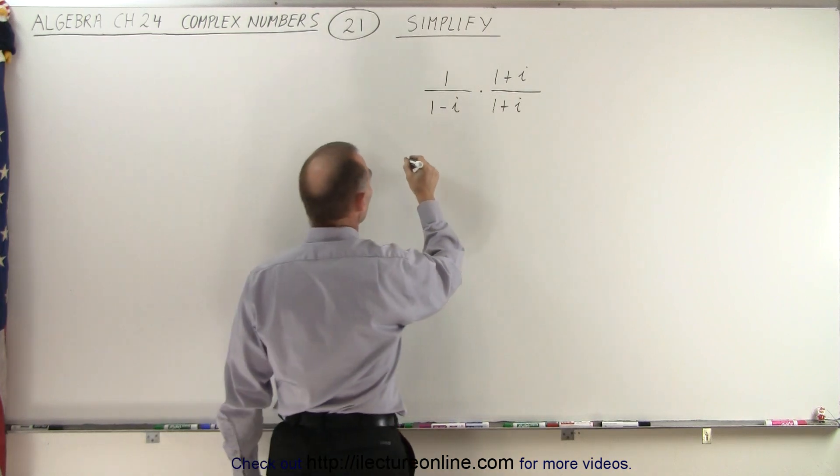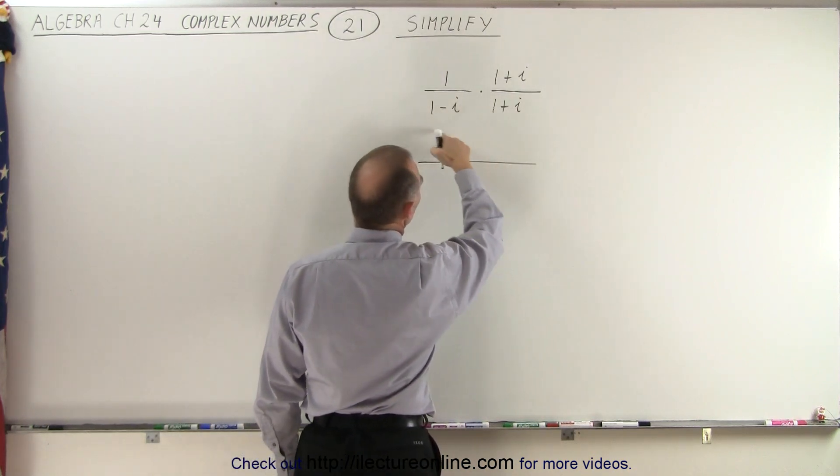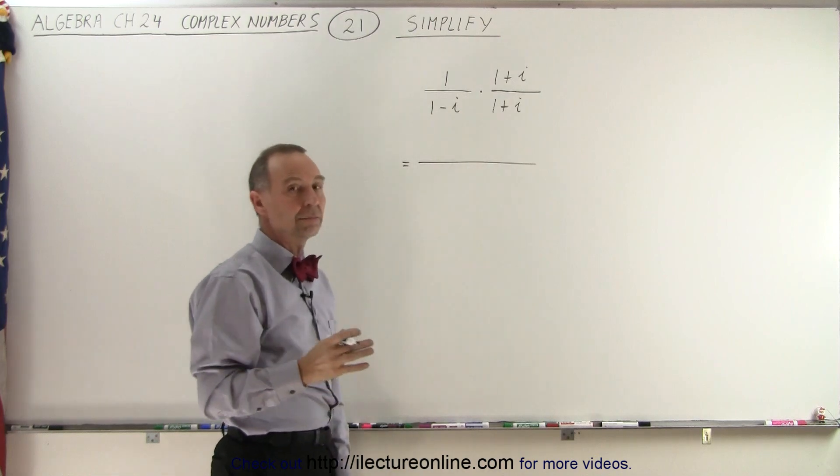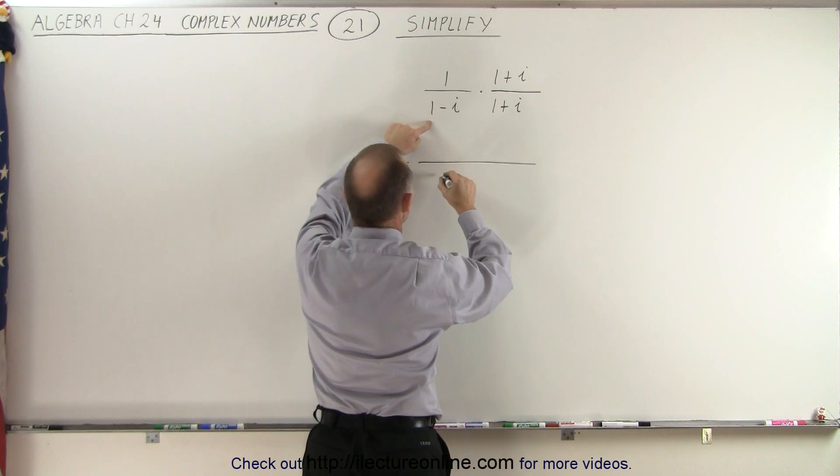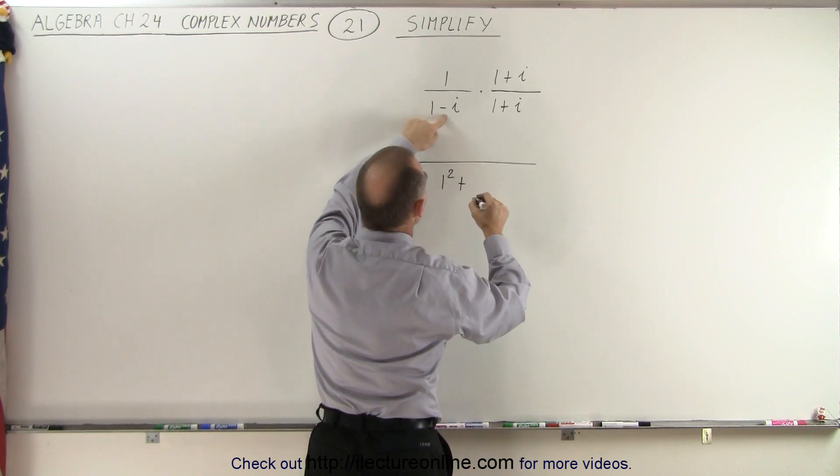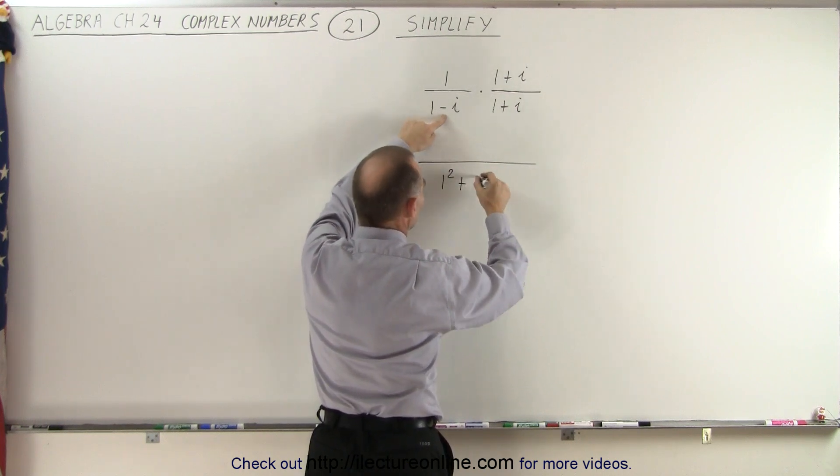Once we've done that, we realize that in the denominator we will end up with a real number, not a complex number. And that real number will be the first term squared, plus the positive of the coefficient of the second term squared.